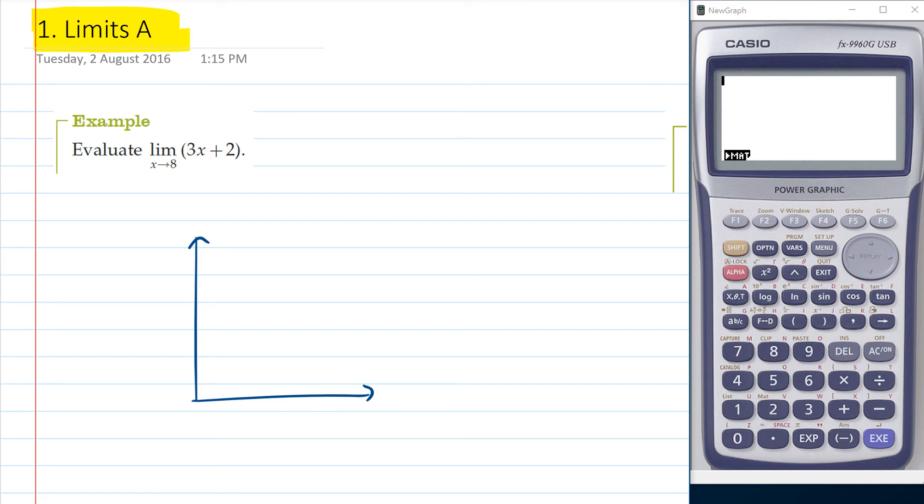So if you've got a function like this and you're wanting to know the limit as x tends to 8 like here, then basically we're just working out the y value of that function. That's one way to explain it.